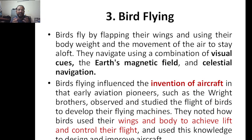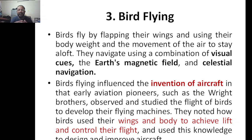This is the third major topic: bird flying. The first topic was studied equalization, second was photosynthesis, and now the third is bird flying. Birds fly by flapping their wings and using their body weight and air movement to stay aloft. They navigate using a combination of visual cues — for example, the earth's magnetic field or celestial navigation.